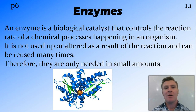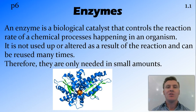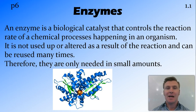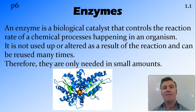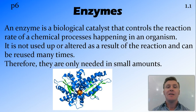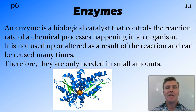When an enzyme works to control the rate of reaction — usually speeding it up — it is not used up as part of the reaction. So we have an enzyme at the start of the reaction, and once the reaction is finished we still have the same enzyme. It's not used up or destroyed, which means it can be reused over and over again and we only need enzymes in small amounts.